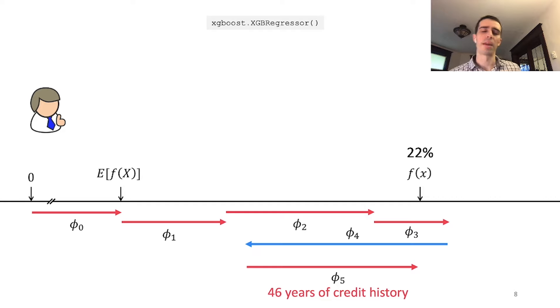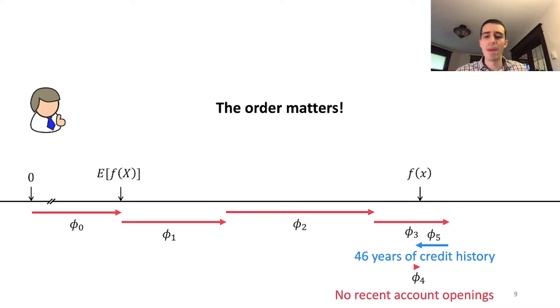More complicated models are where people are most interested. In that case, you can't just use a single ordering—you can't introduce features one at a time, because the order matters. With AND or OR functions, whichever you introduce first or second gets all the credit. Here's an example: no recent account openings and 46 years of credit history. If we fill out account openings first then credit history versus credit history first then account openings, it makes a huge difference. This means there's a strong interaction effect. That's where SHAP comes in to fairly distribute effects at high-level interactions.